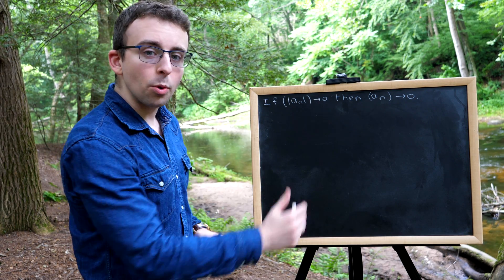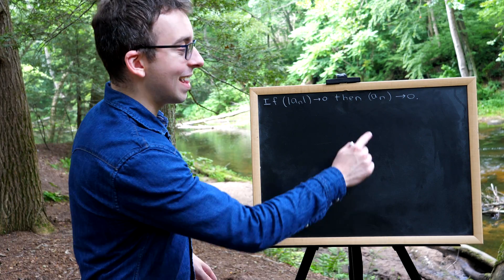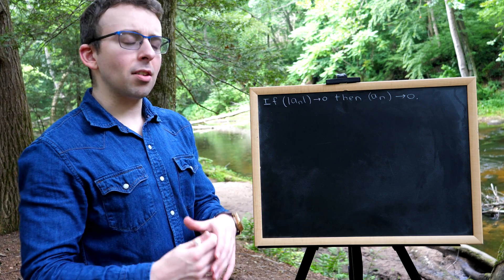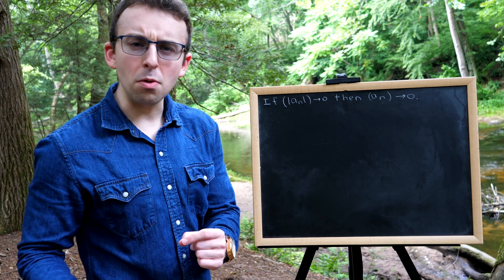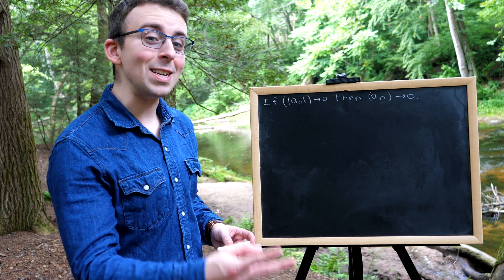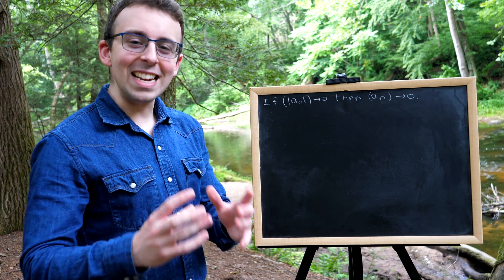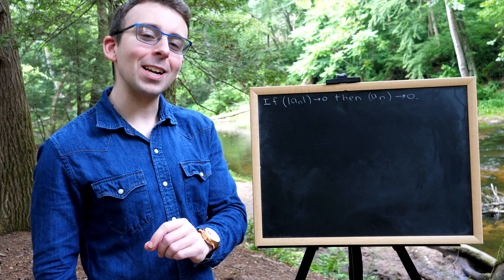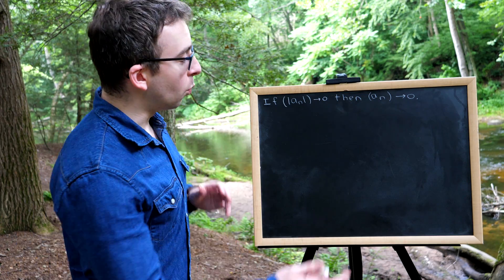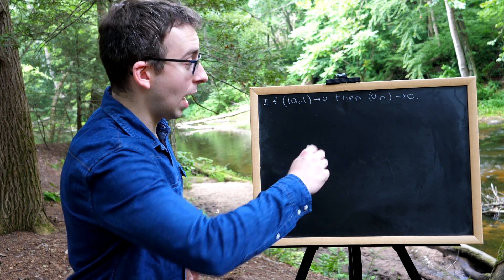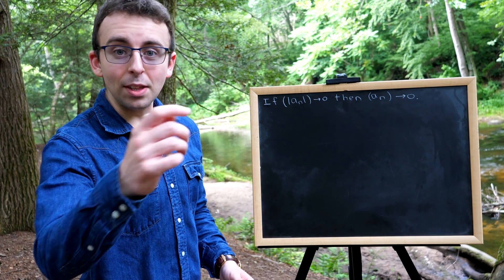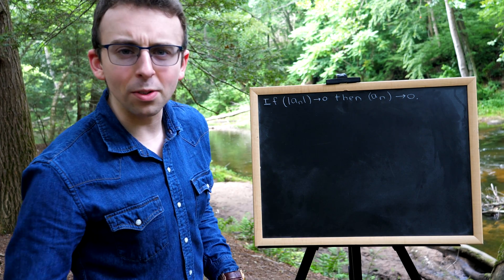If the absolute value of a sequence converges to 0, then the sequence also converges to 0. This theorem is sometimes called the absolute value theorem for sequences, and it's straightforward enough that we'll be able to squeeze two proofs into this lesson. I definitely recommend giving it a try yourself before watching the rest of the video. Because I'm out here in the woods with my tiny chalkboard, I won't fully write out all the details, but I think you'll find it simple enough to fill in whatever holes I leave yourself.